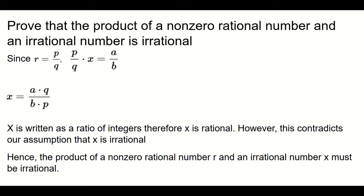So therefore, we say that the product of a non-zero rational number R and an irrational number X must be irrational.